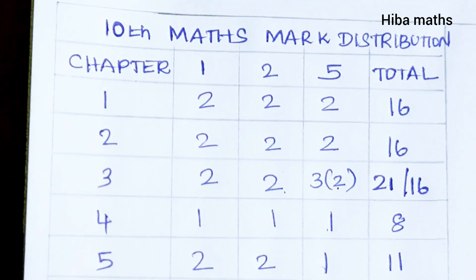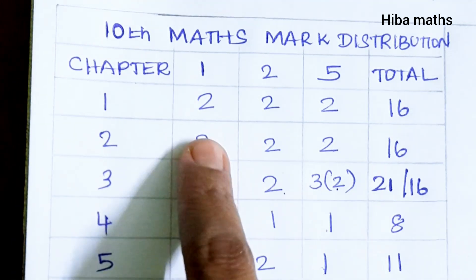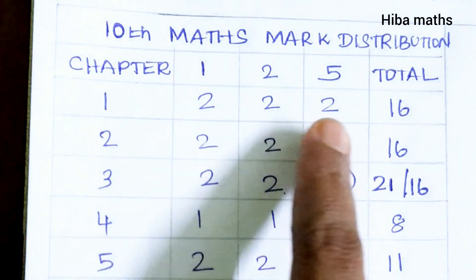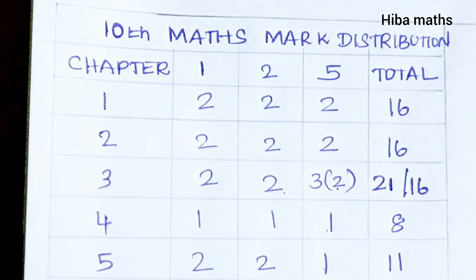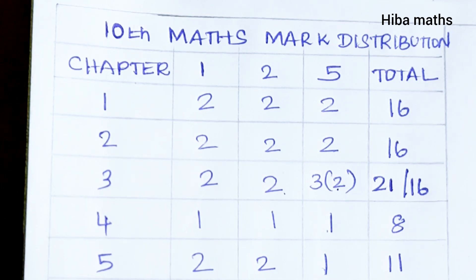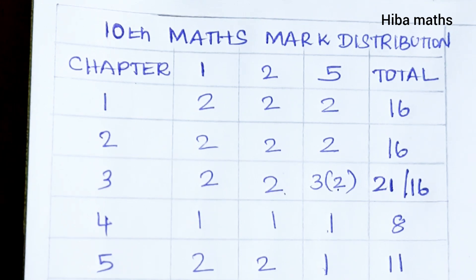You can use this for the exam. In the first chapter, there are 2 one-mark questions, 2 two-mark questions, and 2 five-mark questions. The two five-mark questions are from 1.1 and 1.5. You can ask the last question in 1.2 — ask the last 5th question.